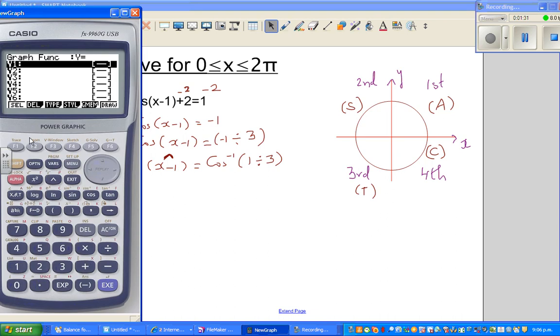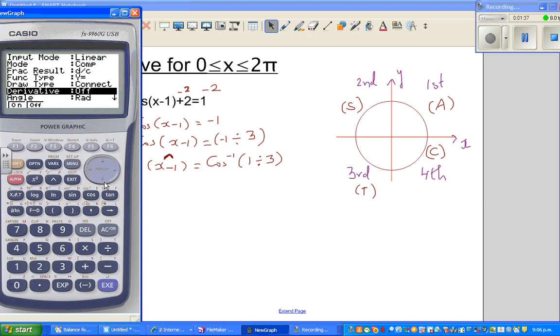So you get your calculators out and go to your run. And before you do any calculations, it is a good habit to check. You are working in radians, your angle should be in radians. So you go shift cos bracket 1 divided by 3. I will round it to 2 decimal places. So in radians, x minus 1, which is your reference angle is 1.23.